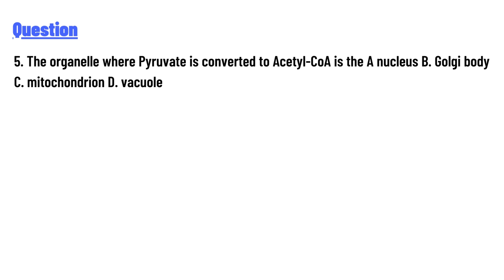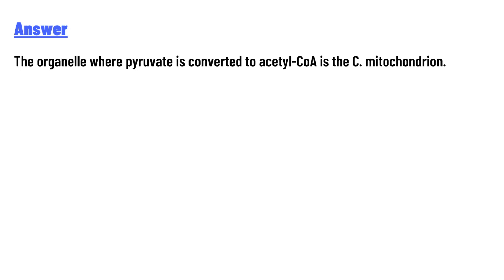A) nucleus, B) Golgi body, C) mitochondrion, D) vacuole. The organelle where pyruvate is converted to acetyl COA is C — mitochondrion.